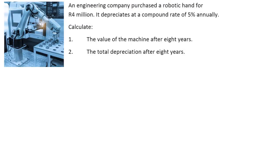Let us look at the following problem. An engineering company purchased a robotic hand for 4 million rand. It depreciates at a compound rate of 5% annually. When calculating the depreciation of an item that depreciates at a compound rate, we use the following formula. This formula is number 26 on your formula sheet. This type of depreciation is also known as the reducing balance depreciation.